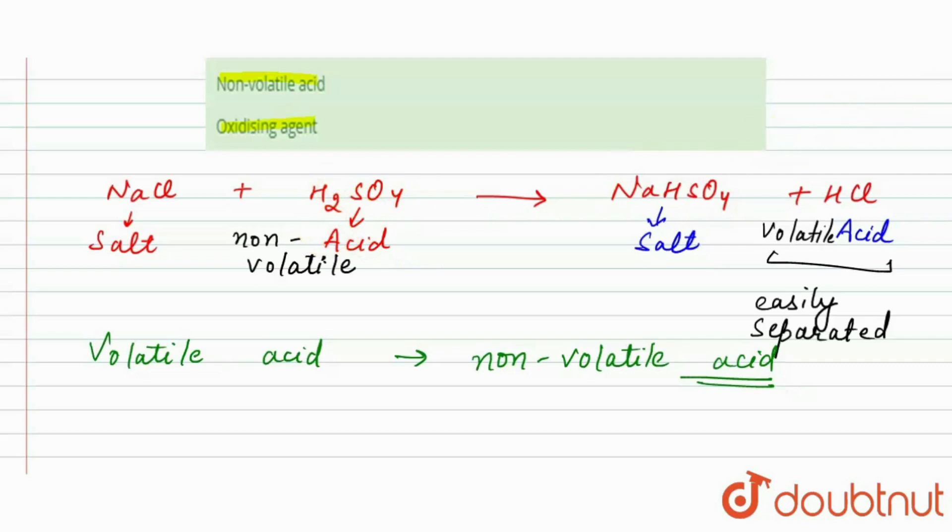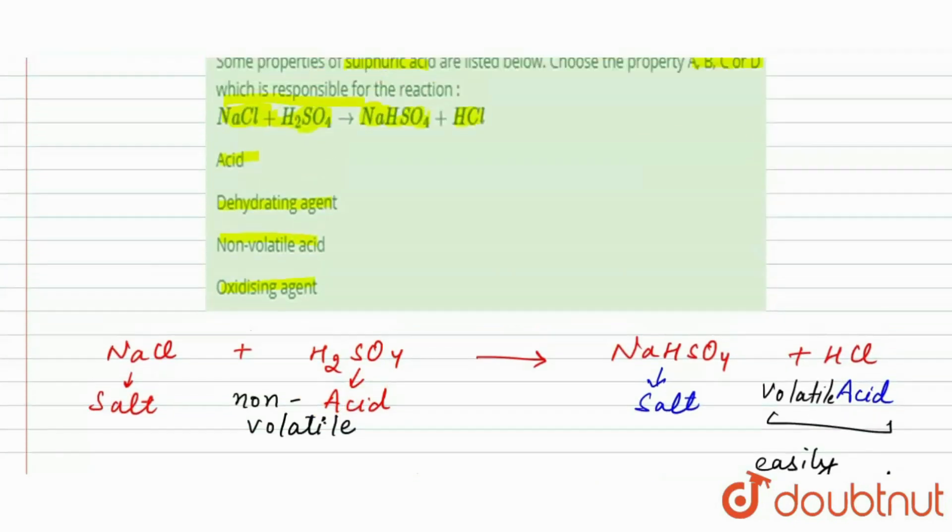So here which property has been used for H2SO4? That is non-volatile acid. Because here we have both sides salt plus acid, salt plus acid.